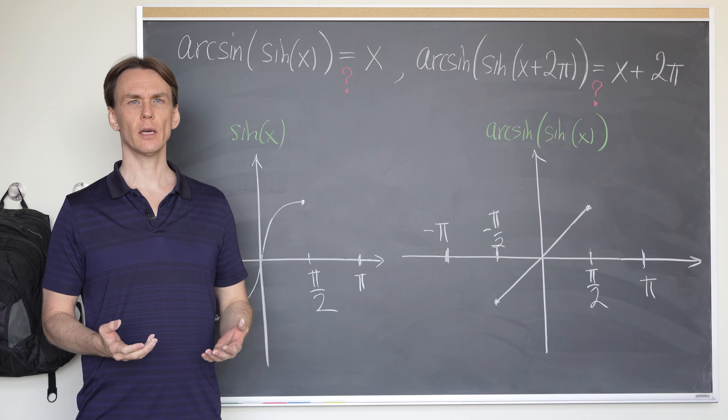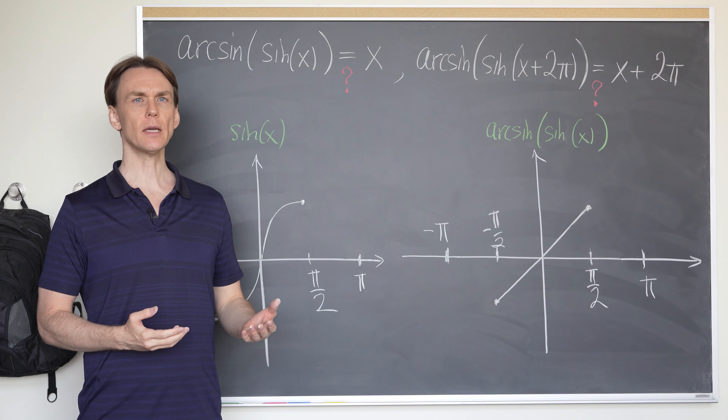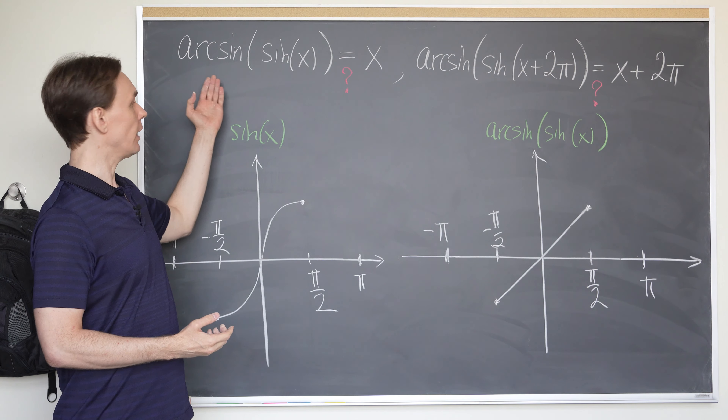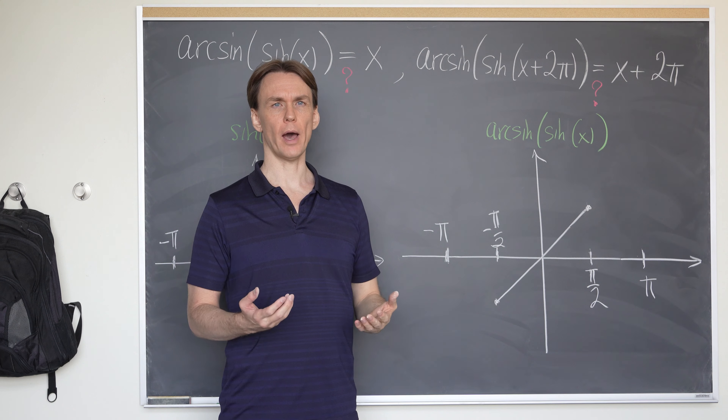What happens when you take sine of x and plug it inside the arcsine? Since they are inverse functions, do they just cancel each other and you end up with x? Well, if so, then if you take sine of x plus 2π and plug it into arcsine, if they simply cancel each other, then you should also end up with x plus 2π, right?